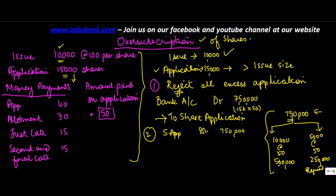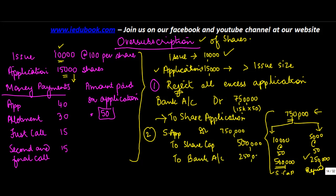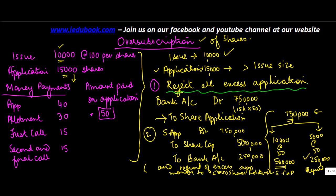The consolidated entry passed is: Share Application Account debit 7,50,000. Of this, 5,00,000 was actually due towards share application and goes to Share Capital Account — credit Share Capital Account. The balance 2,50,000 has to be refunded, so you credit Bank Account because you will be making payment to these shareholders. The narration is: amount transferred to Share Capital Account and refund of excess application money to 5,000 shareholders. This was the first option — reject all excess applications.